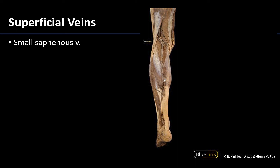Here you can see the small saphenous vein running superficial to the gastrocnemius muscle, which is one of the calf muscles of the posterior leg. This vein will drain into the deeper popliteal vein in the popliteal fossa region, which is right here, posterior to the knee joint. I know I'm looking at the posterior leg because we have the gastrocnemius with its two heads, and you can also see the calcaneal tendon — the Achilles tendon — right here, confirming this is a posterior view of the leg.